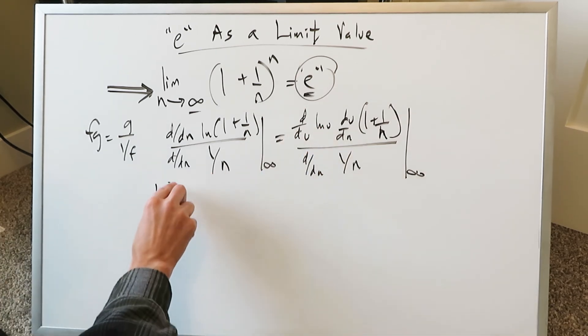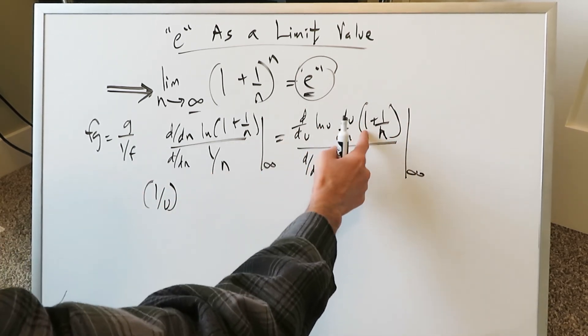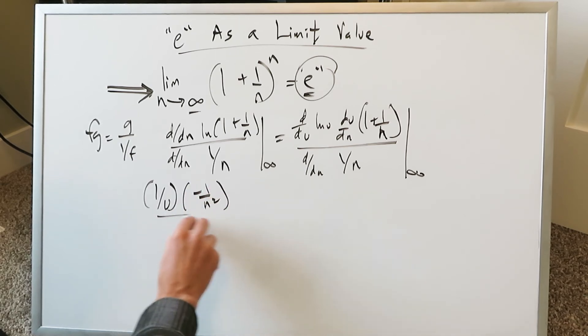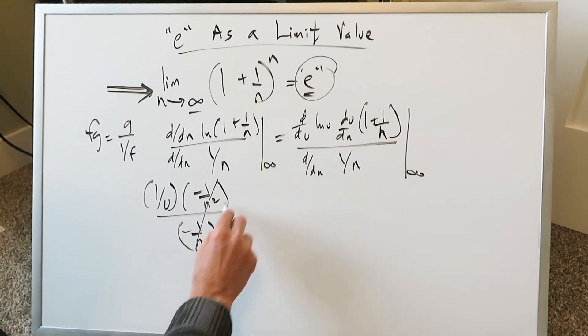The derivative of ln u is 1 over u. The derivative of all of this, the 1 goes away. 1 over n is minus 1 over n squared. You can work that on the side. The derivative of this is minus 1 over n squared. These will cancel out but you can still apply infinity at the end.